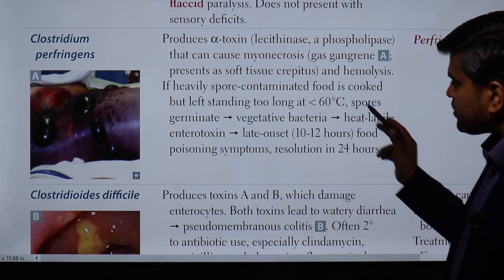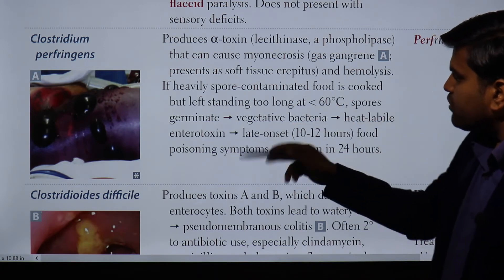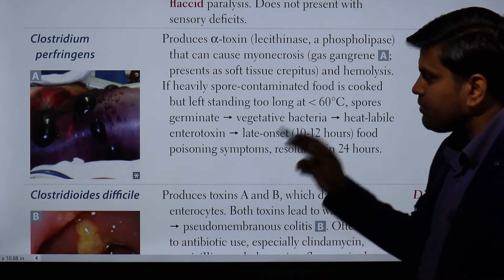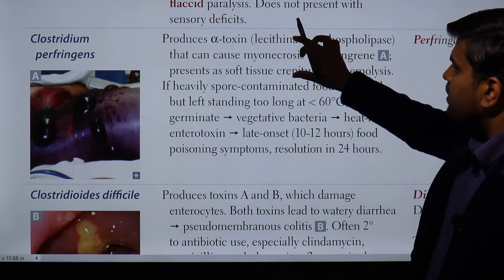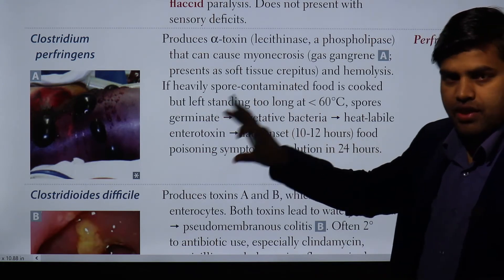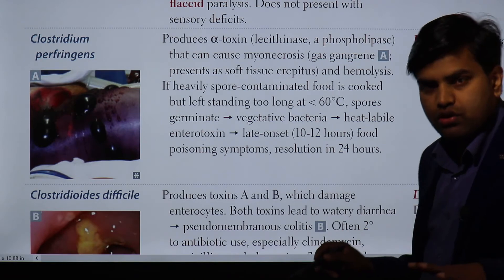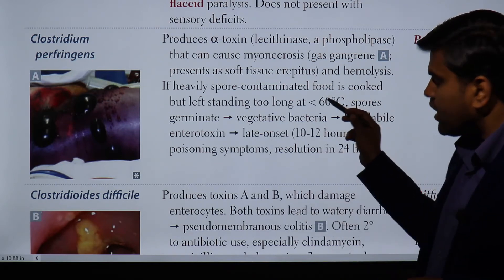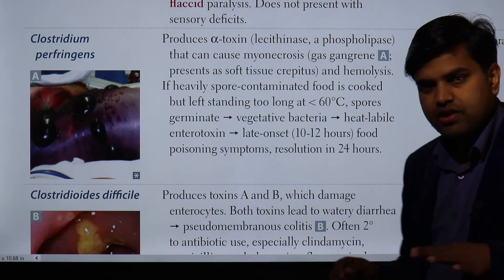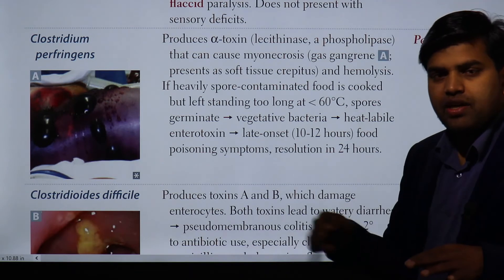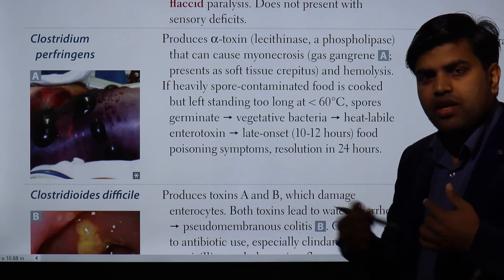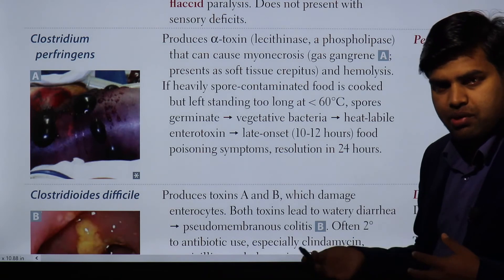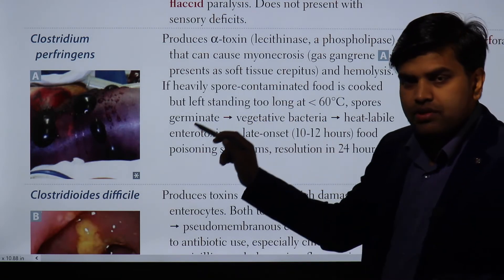Gas gangrene presents with soft tissue crepitation and hemolysis. If heavily spore-contaminated food is cooked but left standing at less than 60 degrees Celsius, the spores germinate into vegetative bacteria, which release the heat-labile toxin. This causes late-onset food poisoning. The enterotoxin goes into the intestine, activates the enteric nervous system, and causes diarrhea and vomiting.